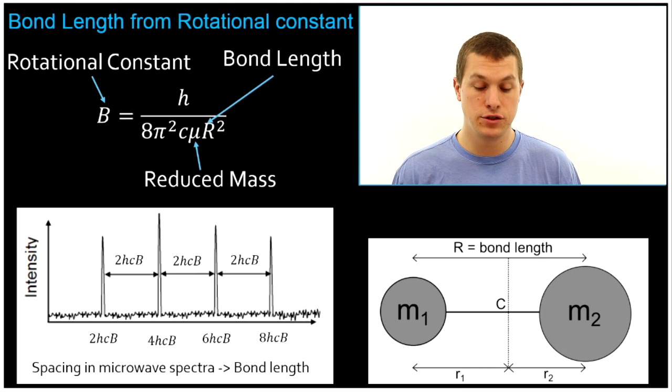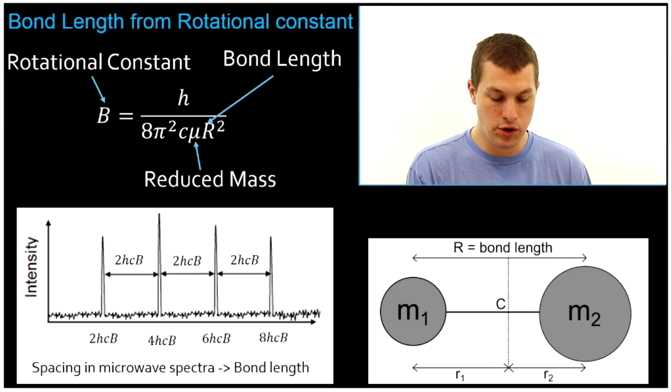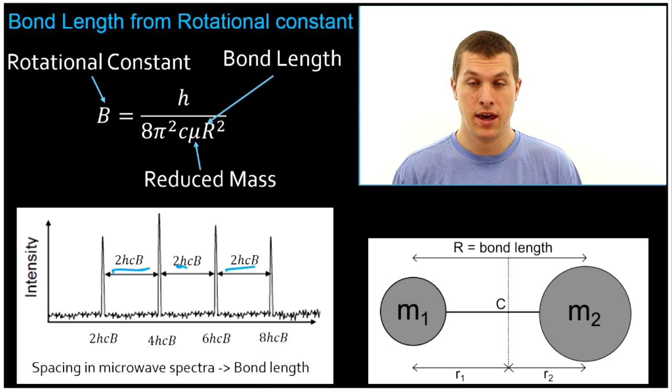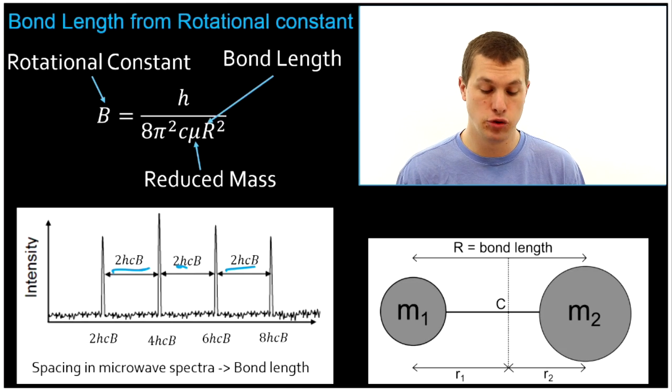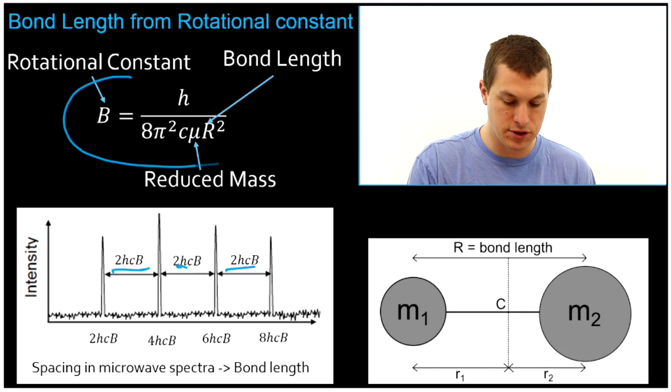So the idea here is you've gone into the lab and you've collected a microwave spectra. And when you did that, you'll get this gap between all of your different absorption peaks. And that gap tells you about the rotational constant. And if we know the rotational constant, we can calculate bond length. Here's the equation that allows us to do that.